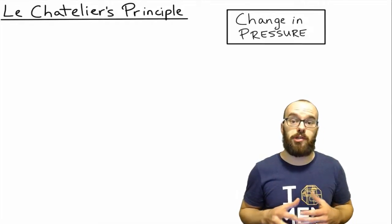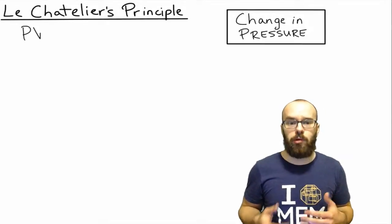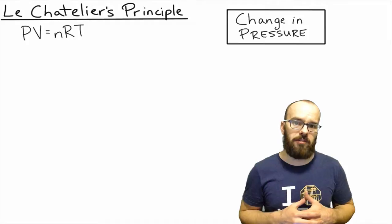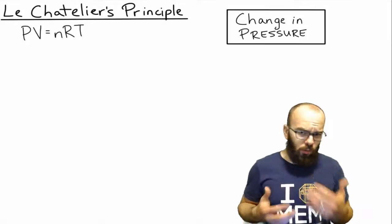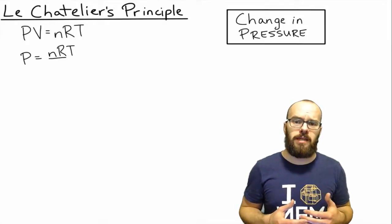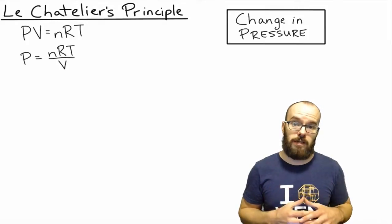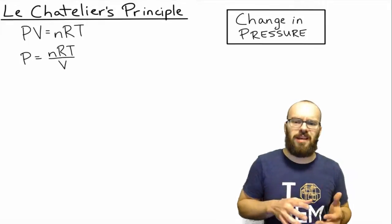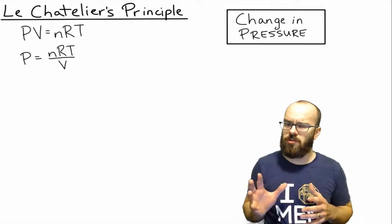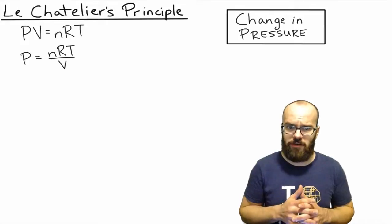Now let's look at what happens whenever we change the pressure. We're dealing with gases here, so let's start with the ideal gas law. What are the ways to change pressure? P equals nRT over V. We can change the temperature to change the pressure, but the temperature is going to affect the equilibrium in other ways.